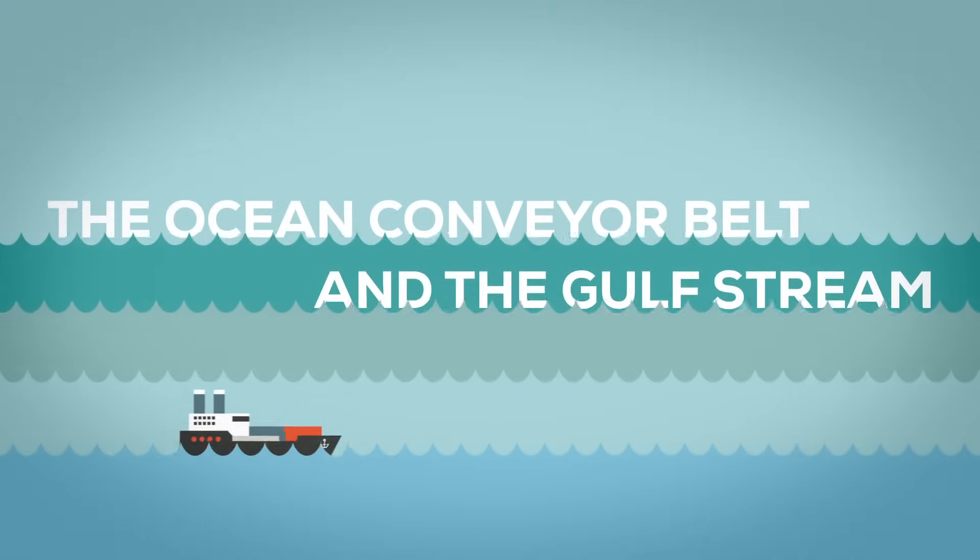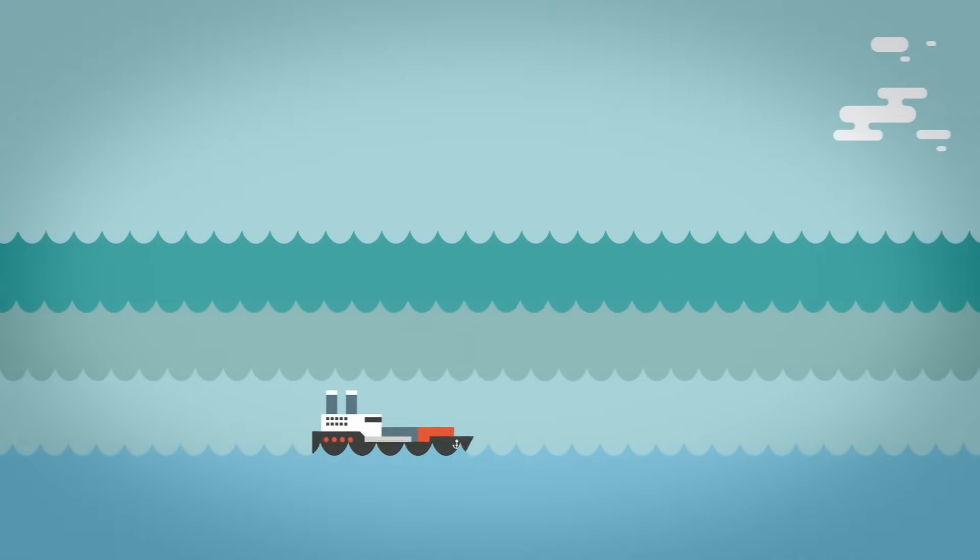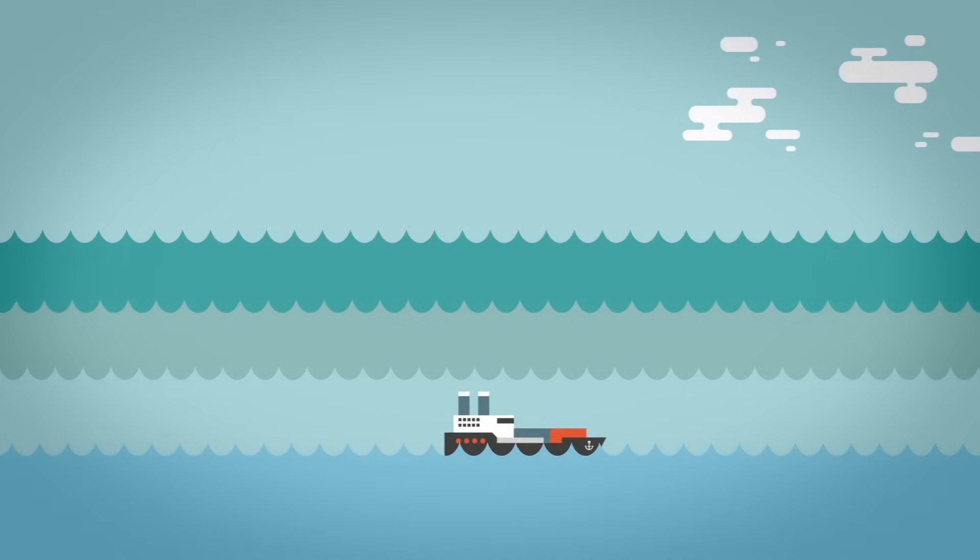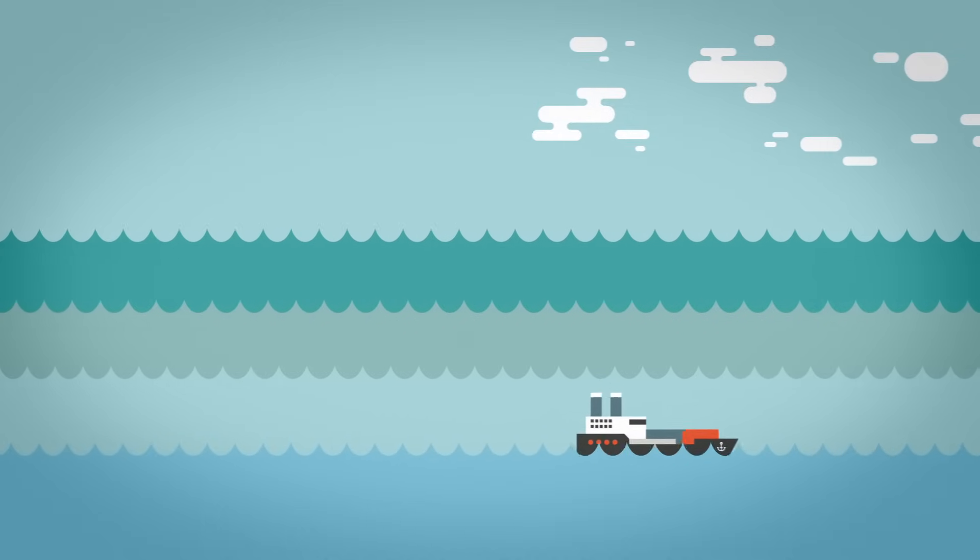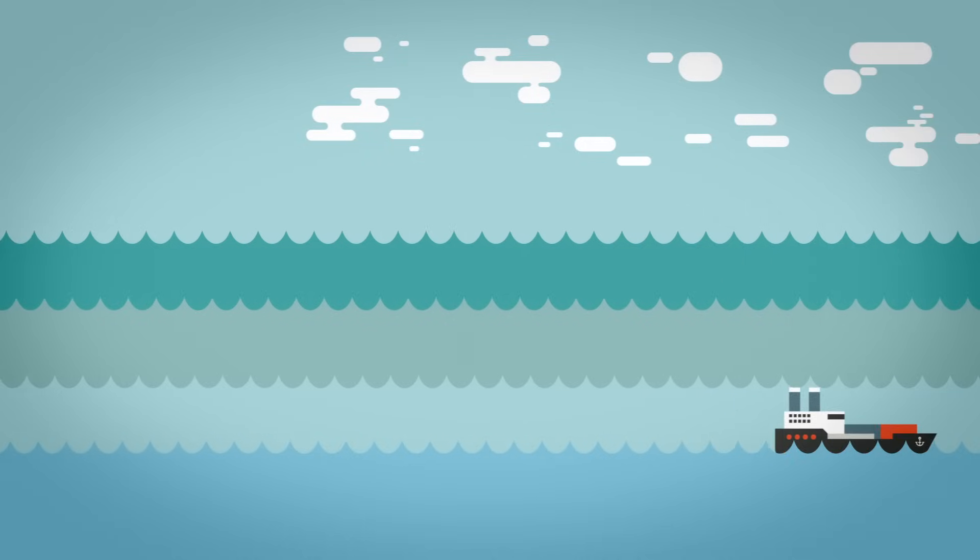The ocean conveyor belt and the Gulf Stream. Ocean currents have a direct influence on our lives. They determine our weather, our climate and much more.